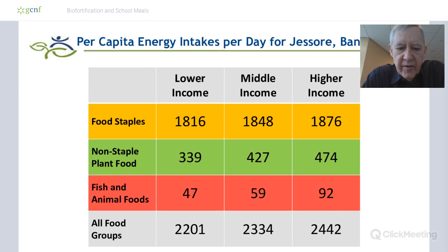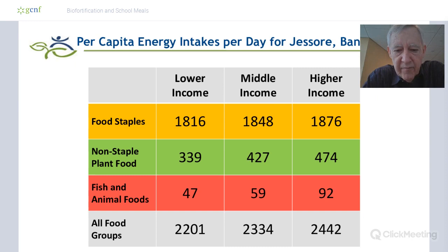At the margin, people spend extra income first on non-staple plant foods and then on fish and animal products. Non-staple plant food consumption increases by about 50% from low to high income, and fish and animal foods roughly double. But the quantities are very small — especially fish and animal foods — because they're 20 times as expensive a source of calories as rice.